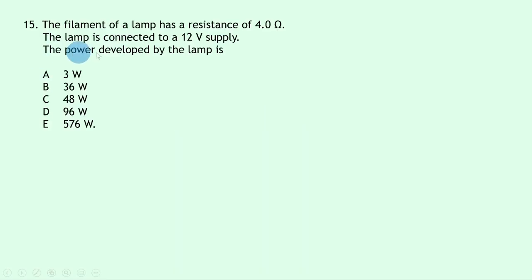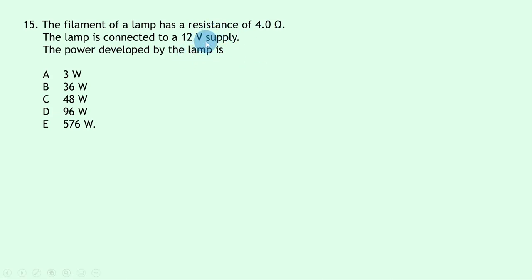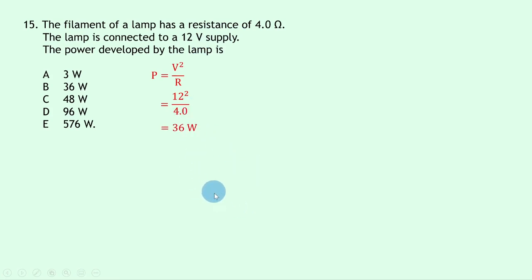Question 15: a lamp filament has resistance 4.0 Ω connected to a 12 V supply. We have voltage and resistance, so use P = V²/R = 12² / 4.0 = 144 / 4.0 = 36 watts — answer B.